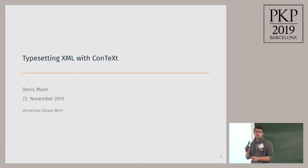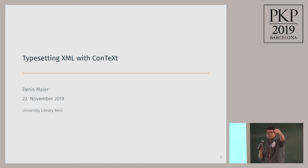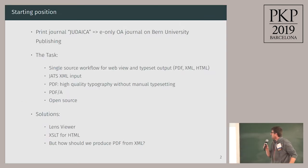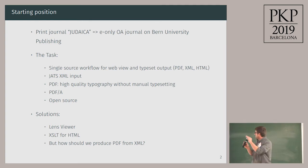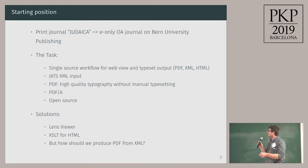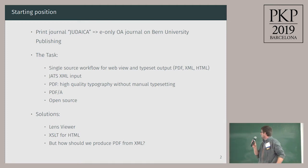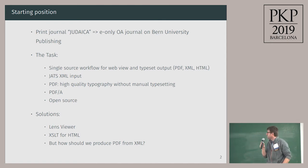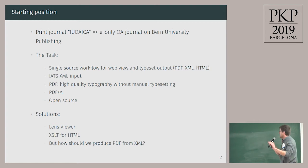I have a couple of code examples and I'm not sure if you can read them in the back, so feel free to come closer if there's need. The context is this: we use a print journal, Eudaica, that we've had before and we convert it to an e-only open access journal that we host in our Bern University Publishing OJS platform. I talked about it yesterday in the lightning talk briefly.